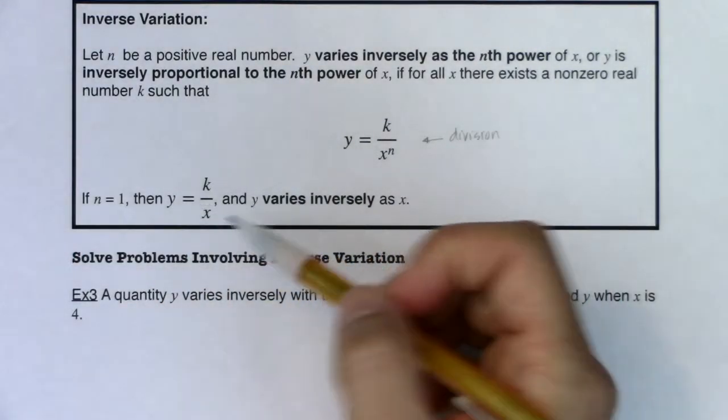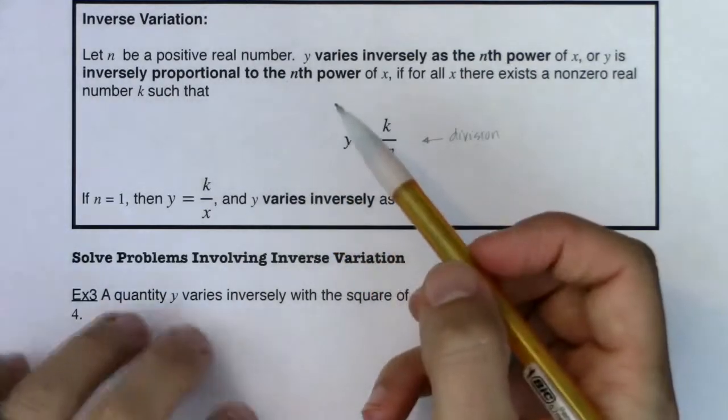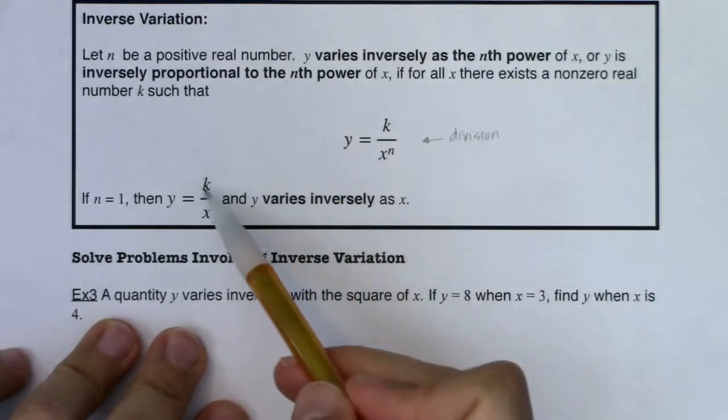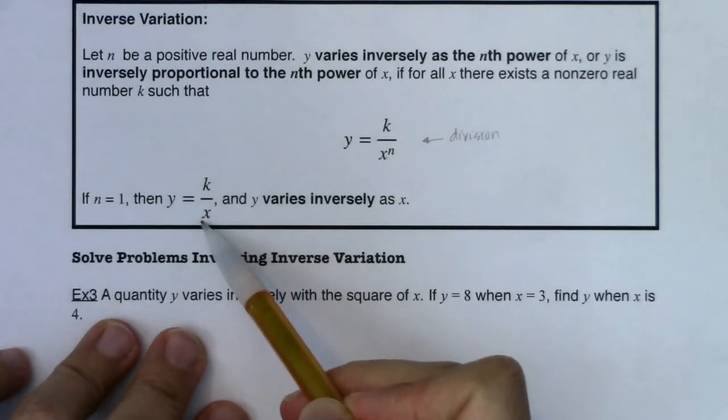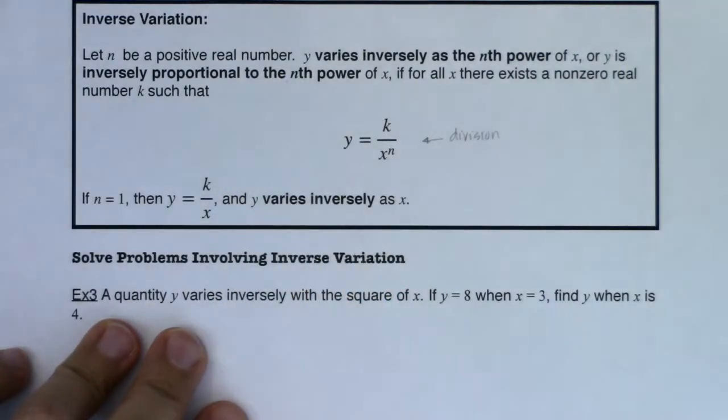Now if you just have your basic inversely proportional problem with n being 1, this just turns into y equals k divided by x, or y varies inversely as x.